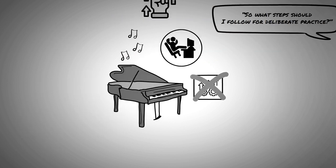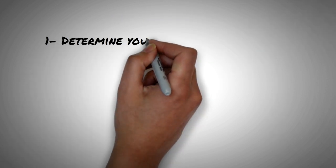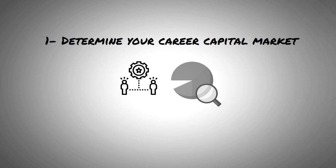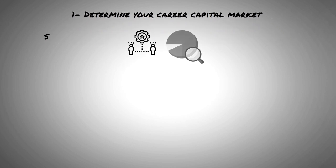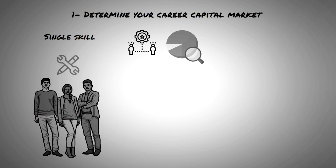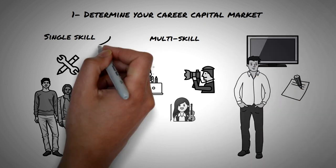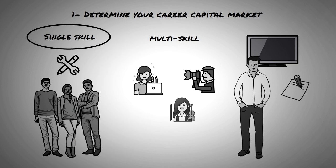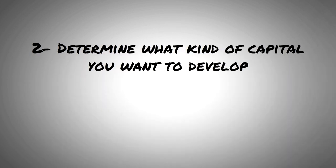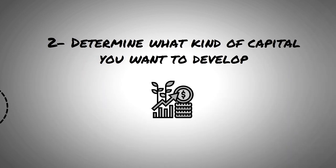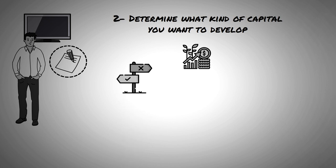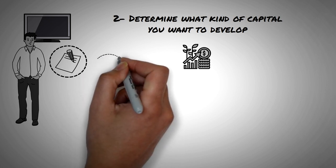And Cal Newport suggests five steps. The first step is to determine your career capital. There are generally two types of capital markets. Single skill, where everyone in the market is trying to acquire one specific skill, and multi-skill, where everyone has different skills. In the case of Mike, he is a television writer, which is a one skill market because the only valuable skill is script writing. The second step is to determine what kind of capital you want to develop. And since Mike is in a single skill market, he doesn't really have a choice. He needs to work on his script writing craft.